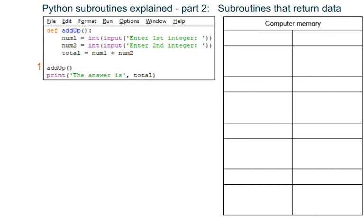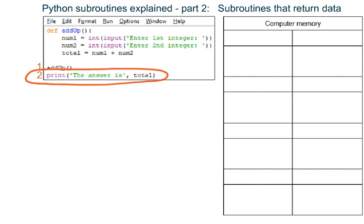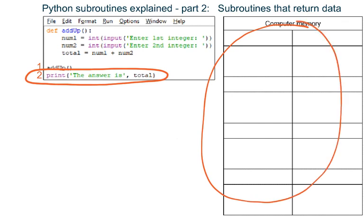Python returns to the place in the program where the subroutine was called from. Python now tries to print out what is stored in variable total, but variable total no longer exists, so the program crashes.